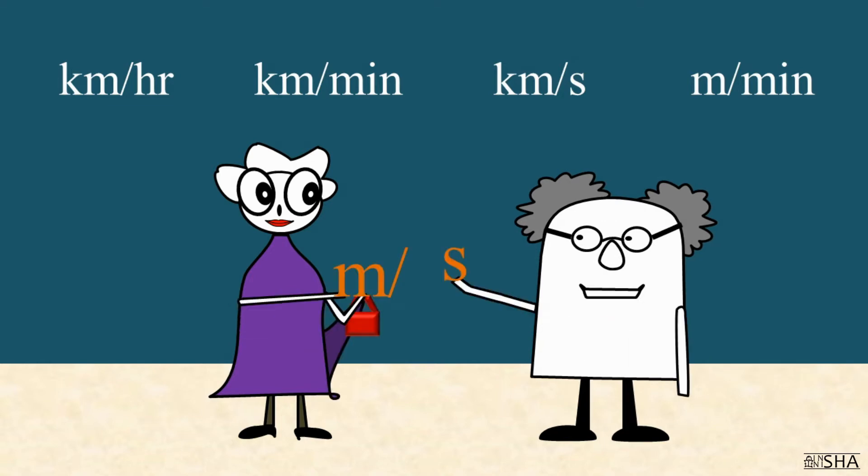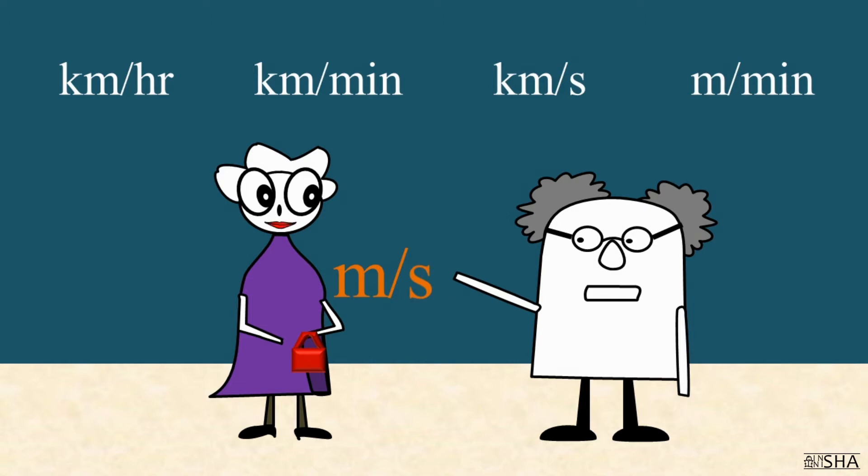In the SI system, the unit of speed is a meter per second. Today we will learn how to convert one unit of speed to another.